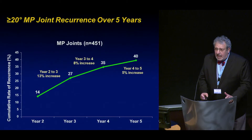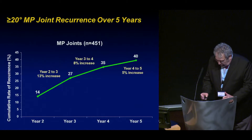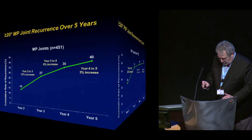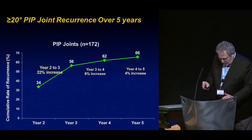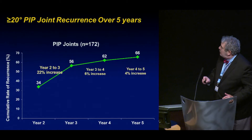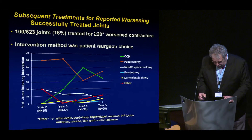Looking just at MP joints, again it's higher in year two to three than in three to four and four to five. PIP joints show the same trend — it flattens out as you get out towards five years.